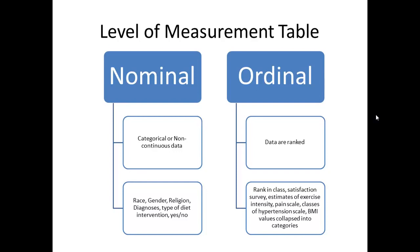We can never talk about the mean or standard deviation for ordinal data — we can only use the median, mode, percentile rank, and some correlation. Going back to our ketogenic diet example, we could improve our question from a yes/no to a Likert scale: strongly agree, agree, somewhat, do not agree. Our conclusions are still limited, but it's a little better than yes and no.